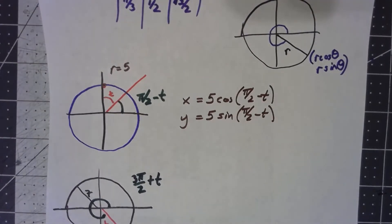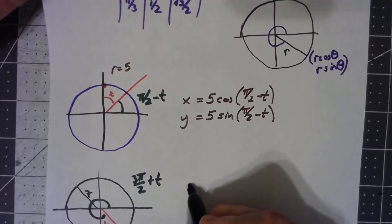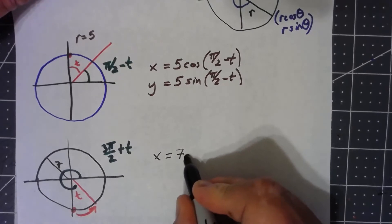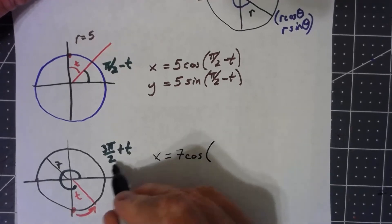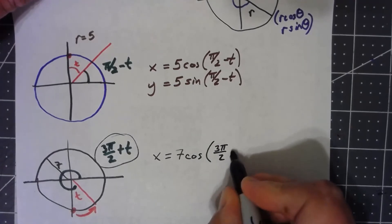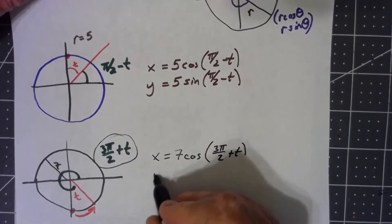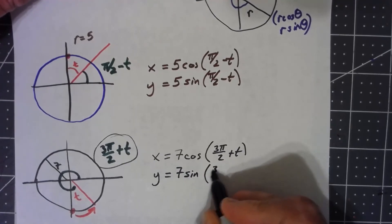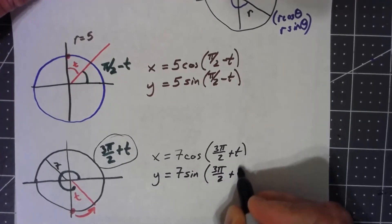Once I've got that, then I'm just going into my basic formulas. My x is going to be my radius of 7 times the cosine of this angle. My y is going to be the exact same thing except for a sine of 3 pi over 2 plus t.